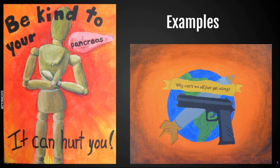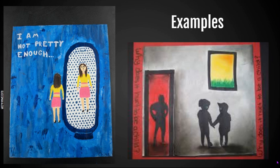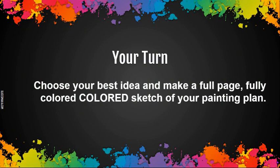Here are more examples — on the left dealing with body issues, on the right dealing with child abuse. Notice how they've used color to get across a mood or emotion, and how they've used text to make you think, ask you a question, and get their message across. These are things I want you to consider doing in your painting as well. So in your sketchbook: full page, fully colored sketch of your painting plan. I can't wait to see it.